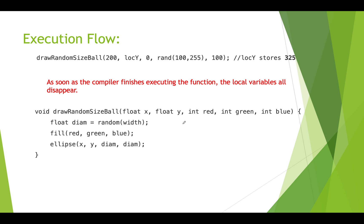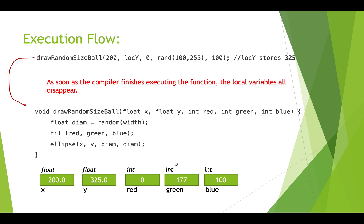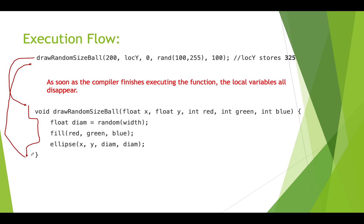Another thing to think about is execution flow. When the compiler reaches a function call, execution jumps to that function — local variables are created, values are stored, the body executes, and when done the local variables disappear and execution jumps back to execute whatever line of code comes next.